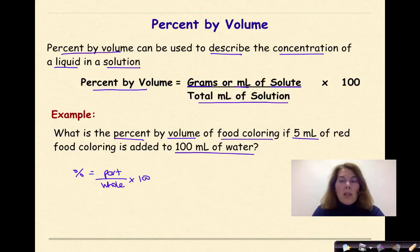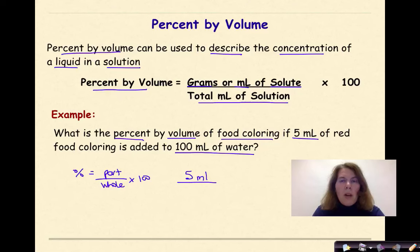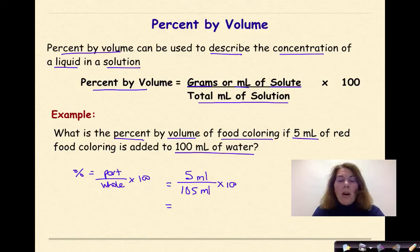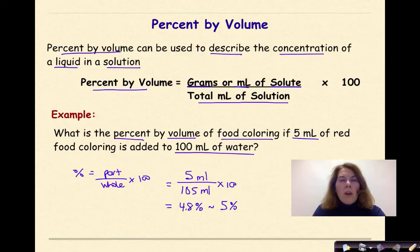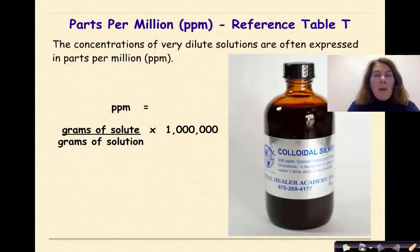In this case, the part is the 5 milliliters of food coloring. Again, we have to be careful — they're telling us 100 milliliters of water as our solvent. So the total volume of our solution will be 105 milliliters. So we do 5 divided by 105 times 100, and our final answer will be 4.8% — or rounding to one significant figure, about 5% food coloring in a total volume of 105 milliliters of solution.